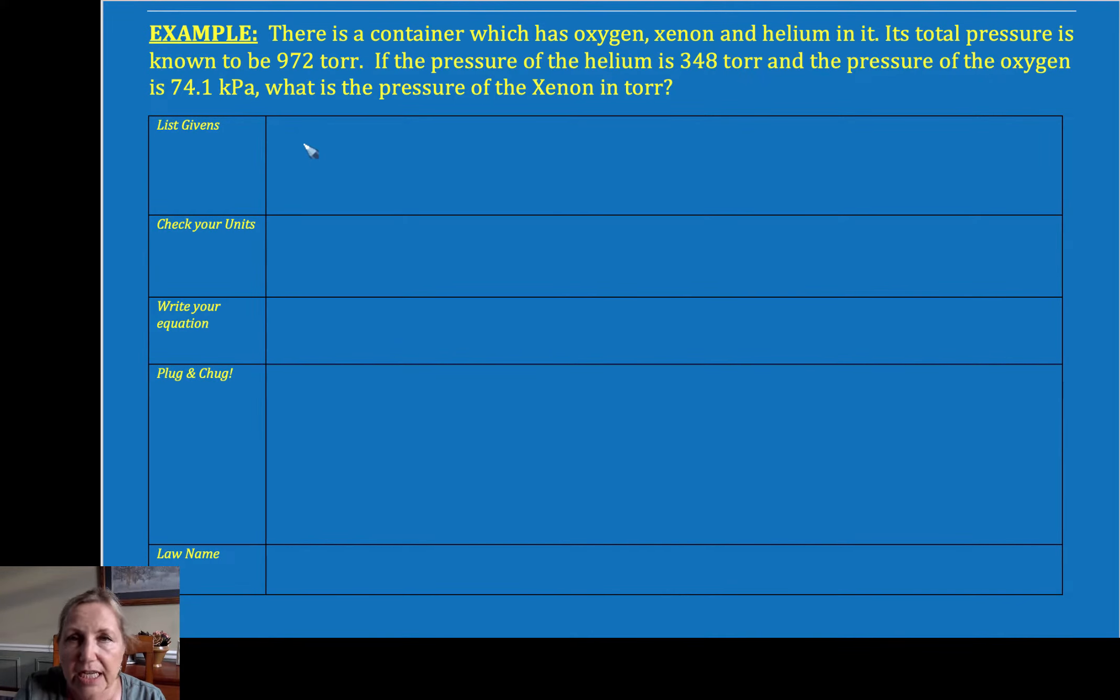So I have a container that has oxygen. So I'm going to have a pressure due to oxygen. I'm going to have a pressure due to xenon. And I'm going to have a pressure due to helium. Now, it tells me the total pressure. So I have a P_total is equal to 972 torr.